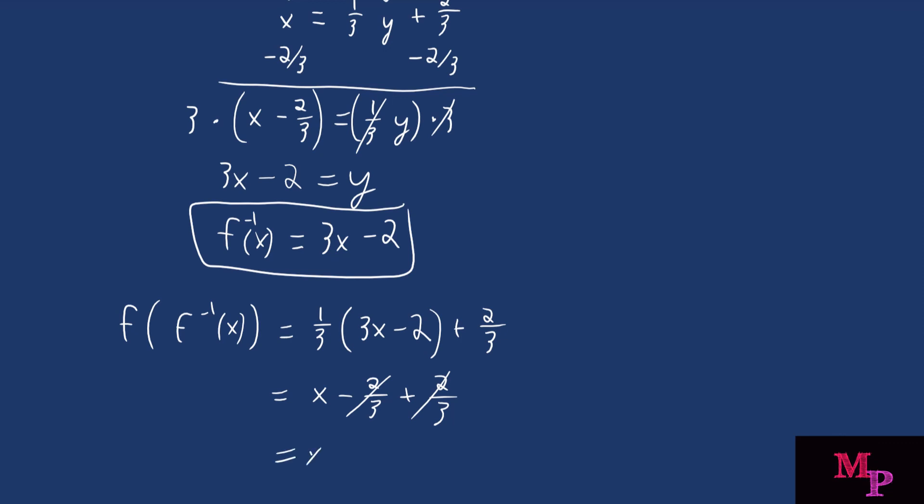Negative two over three plus positive two over three just cancels out to give you zero, and you're left with x. So therefore, the inverse function that we found earlier is correct.